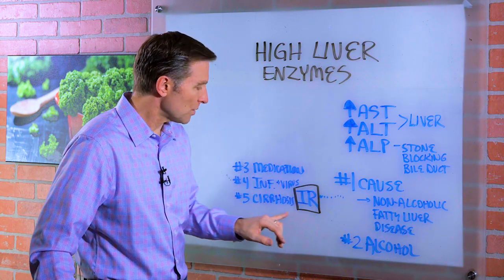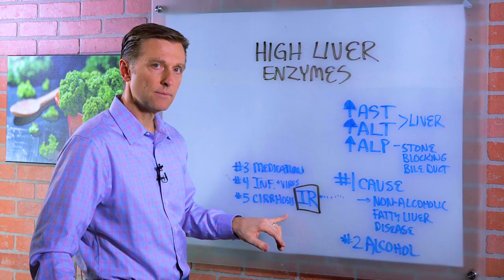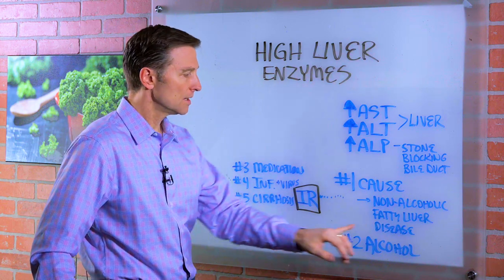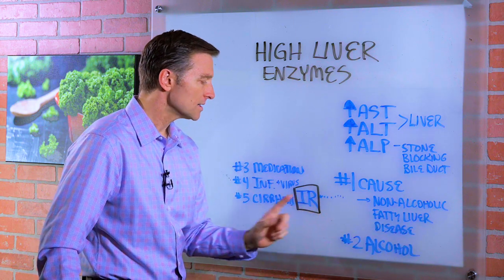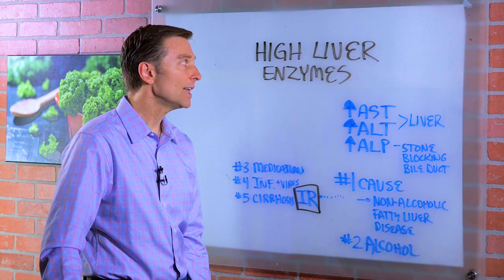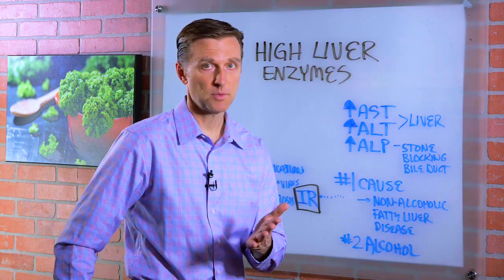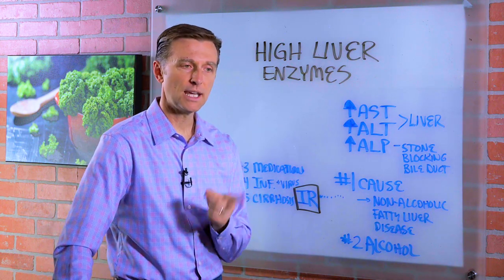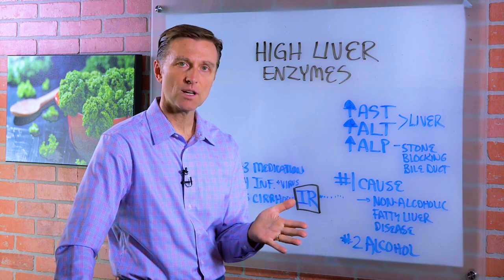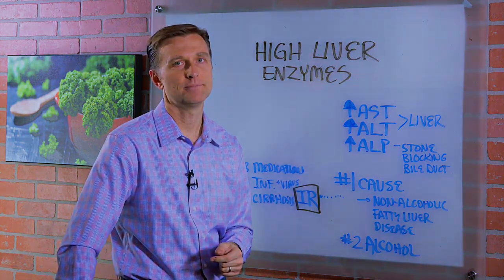Number five: cirrhosis — that's scar tissue of the liver. But of course, what causes cirrhosis is a fatty liver and insulin resistance. So if you have high liver enzymes, this is what I would recommend — very simple: do the keto intermittent fasting program and see if they don't come down. I put a link down below of exactly how to do it.